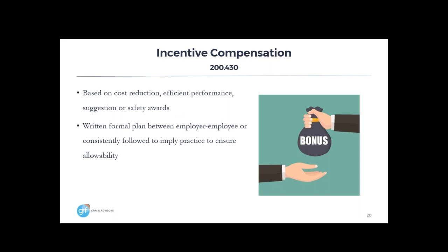For incentive compensation, a lot of organizations may have something about it in their manuals. Many employers don't want to be forced into a formula unless there's a commission situation. But there may be a practice you follow consistently from year to year that implies a policy. For example, in November or December, management may sit down, identify individuals who qualify for an incentive or bonus, and then in January or February those bonuses are dispersed. If you go through that same process every year, that would be considered a consistent practice.